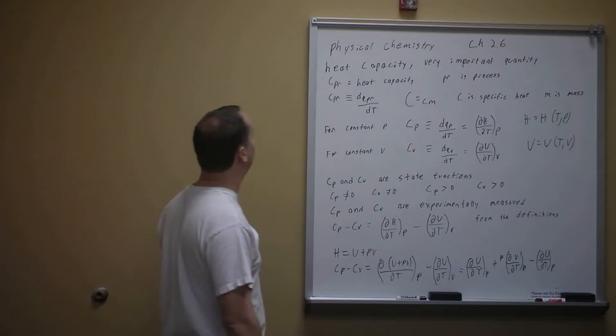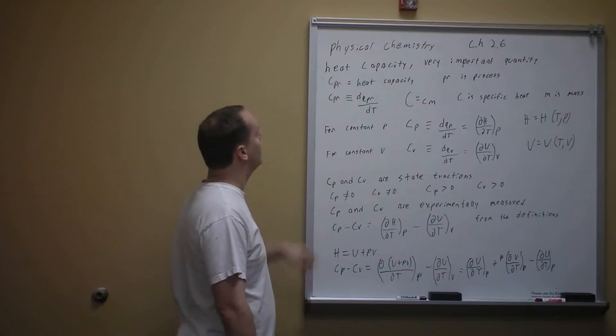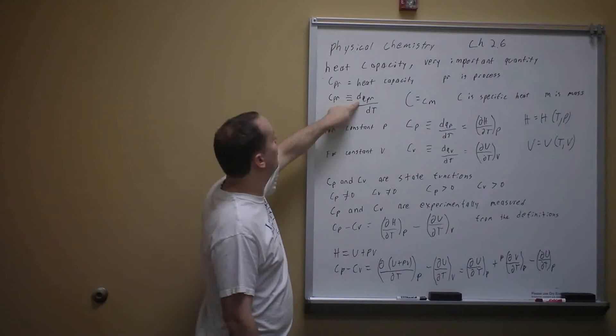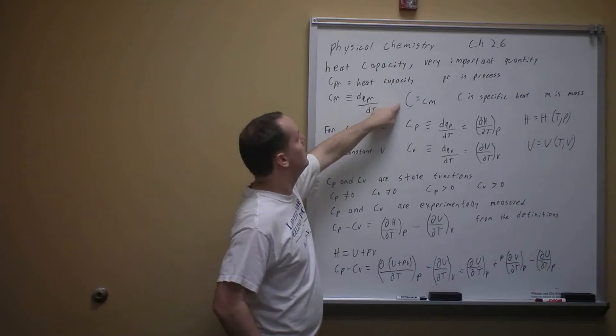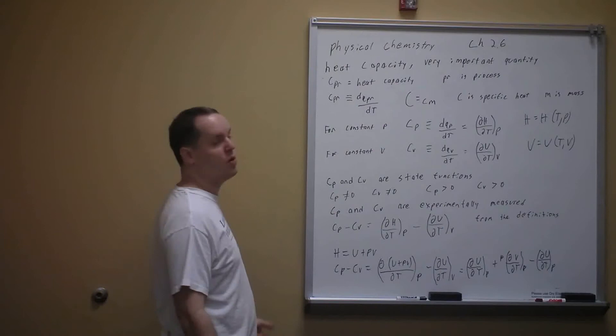There are different types of heat capacity specific to a process. The heat capacity of a process is defined by the differential of heat as it changes with temperature. Capital C is extensive, equal to intensive c times mass. Lowercase c is specific heat or specific heat capacity. Capital C is the heat capacity of the whole system, which is extensive.